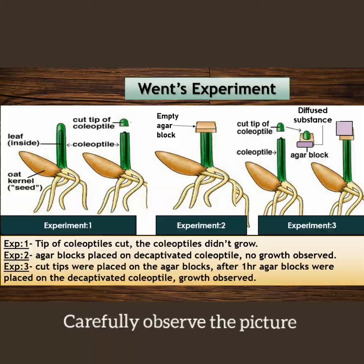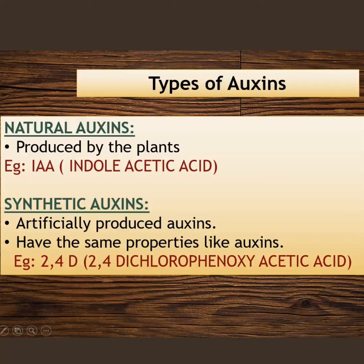There are two types of auxins. The first is natural auxins, which are produced by plants — for example, indole acetic acid (IAA). The second is synthetic auxins, which are prepared artificially but have the properties of natural auxins — for example, 2,4-dichlorophenoxyacetic acid (2,4-D), which is used as a herbicide to kill dicot plants.